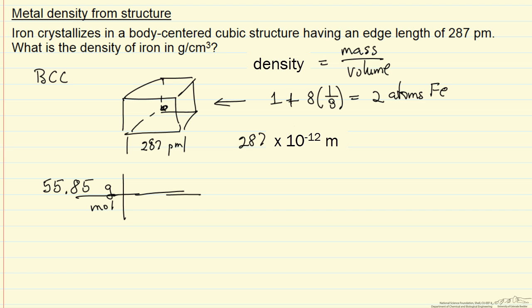Now the mass of 1 atom—we have to use Avogadro's number. This is going to give us the grams per atom, and by multiplying by 2 atoms we will obtain the number of grams of iron.